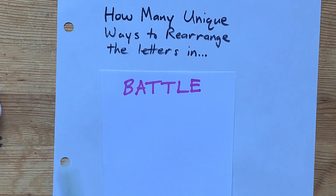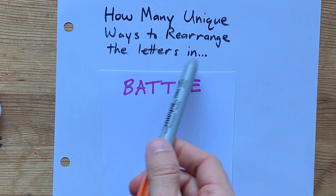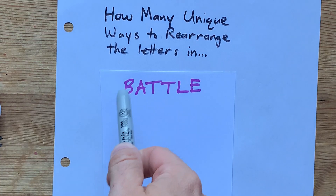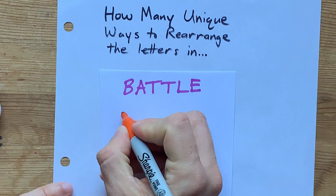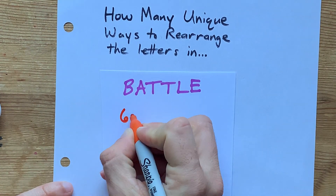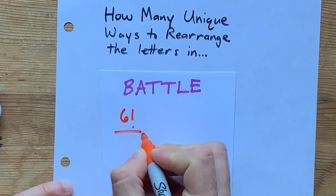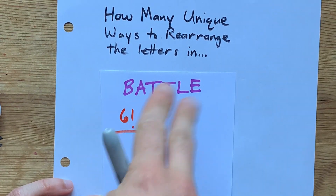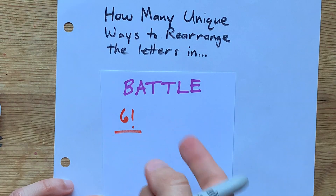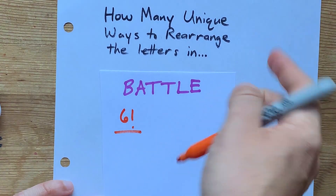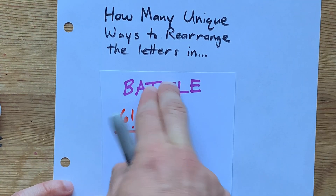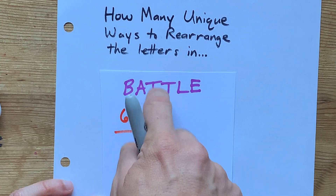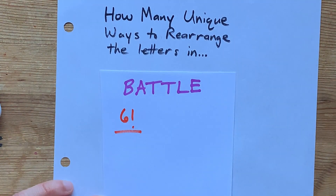How many ways are there to rearrange the letters in the word 'battle'? There are six letters here, so we're going to start with six factorial. But you have to divide out all of the ways that you could have rearranged these where the two T's happen to switch places, because there's a double T in the original word.